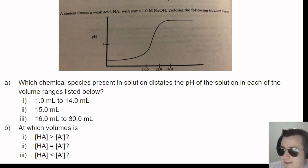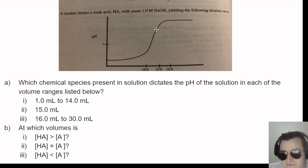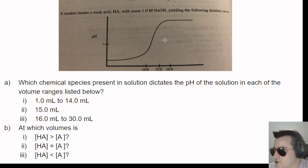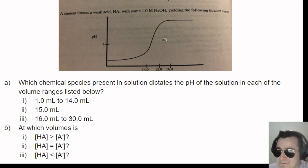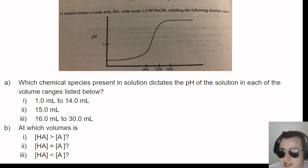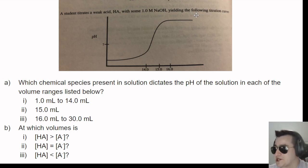At 15 mL, this is the equivalence point — enough base has been added to neutralize all the acid. At this point, NaOH is fully consumed and only the conjugate base (A⁻) remains. So A⁻ dictates the pH at the equivalence point. Beyond 15 mL, everything added is excess strong base — OH⁻ (or NaOH) now dominates and dictates the pH. This mirrors our multi-point buffer calculation from earlier.